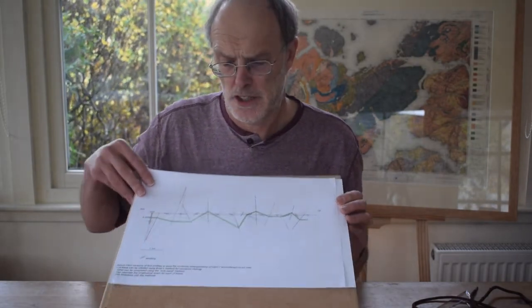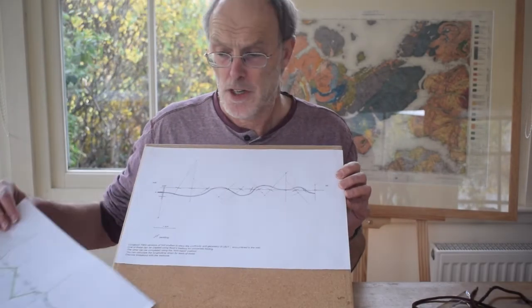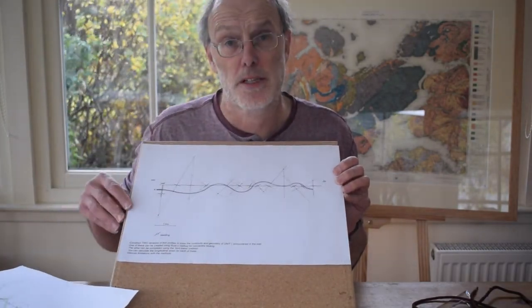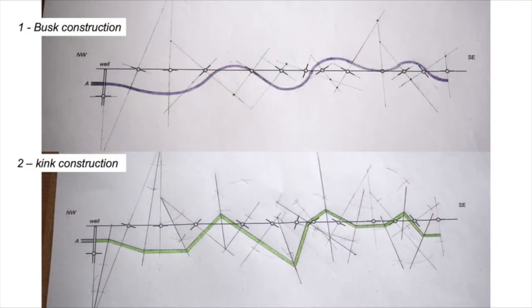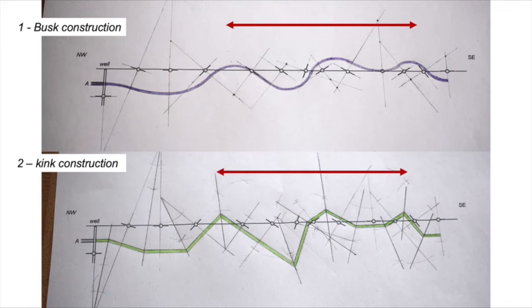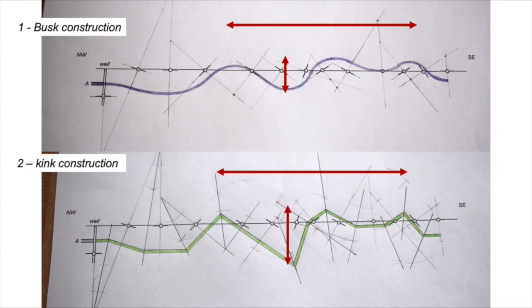Let's compare our two cross-sections: the kink band approach versus the earlier busk method. Looking past the form of the folds, the overall cross-sections are rather similar — they have the same number of folds, and the fold spacing or wavelength is essentially the same. However, there are important differences: the amplitude of the folds is notably different, with lower amplitude folds in the busk construction compared to the kink construction.